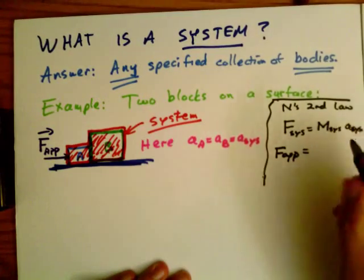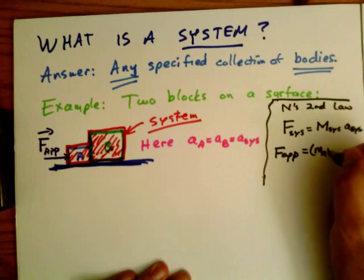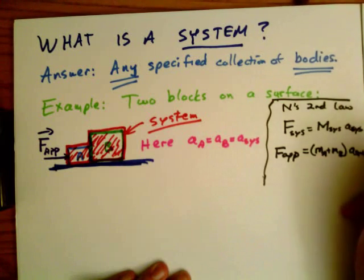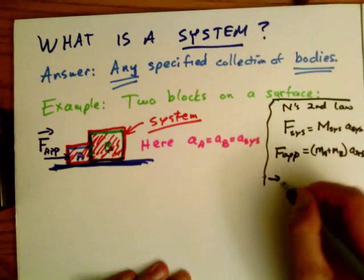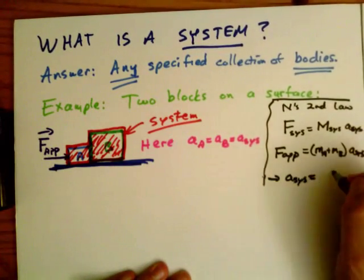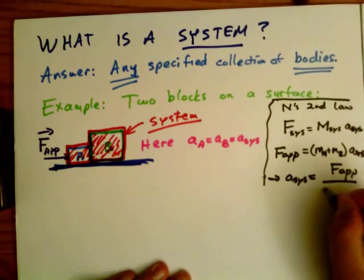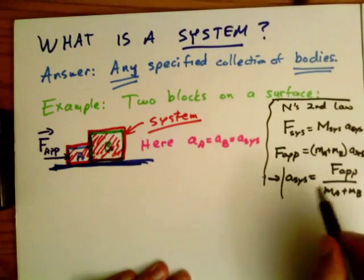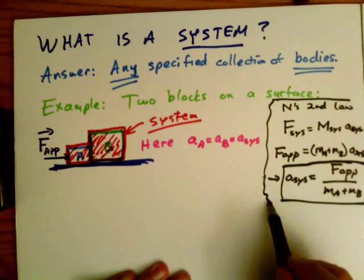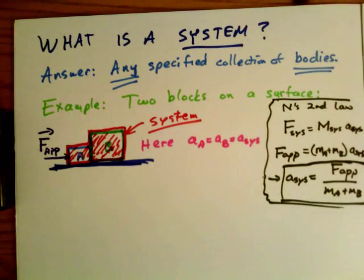And so we can just find the acceleration by substituting in the mass of the two blocks together as the mass of the system. And the only force applied is the applied force. So the acceleration is the applied force over the sum of the two masses. Very easy to get the acceleration when you treat this as a system.